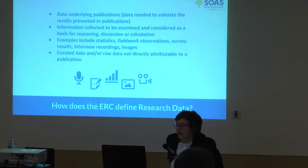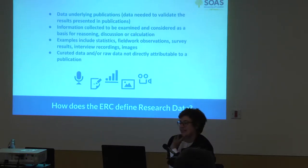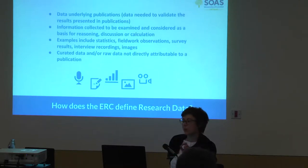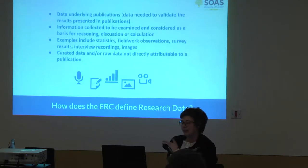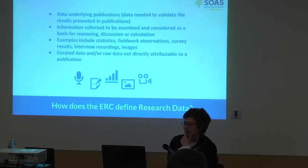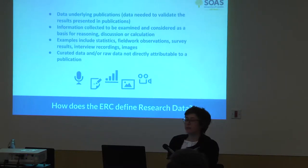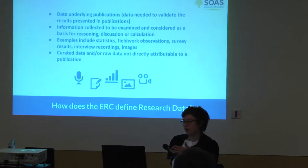How does the ERC define research data? The official line is that it's essentially data that underlies publication — any data needed to validate the results presented in your publications. That's one category. It also includes information collected as a basis for reasoning, discussion, or calculation, with various defined examples. It further includes curated or raw data not directly attributable to a publication — so overall project datasets that haven't necessarily underpinned specific publications would still count as research data to be shared.